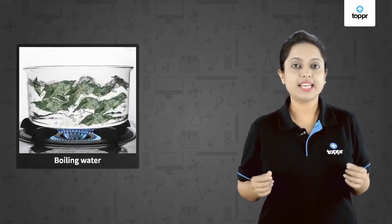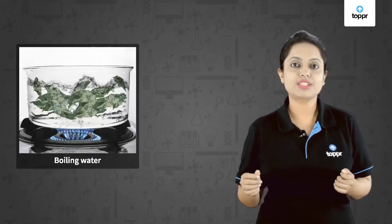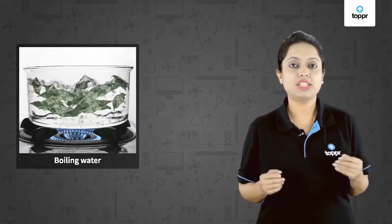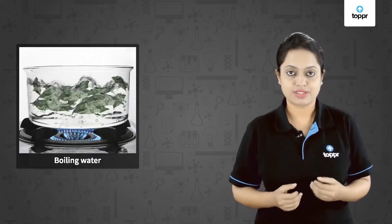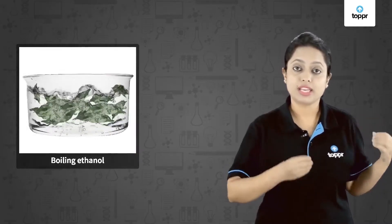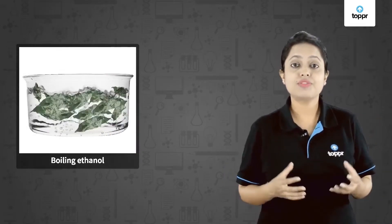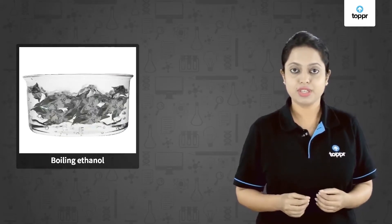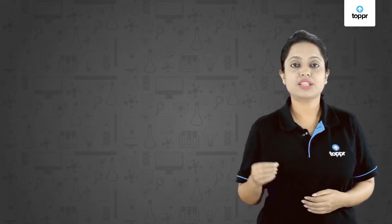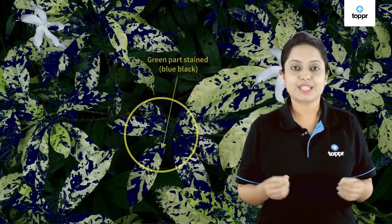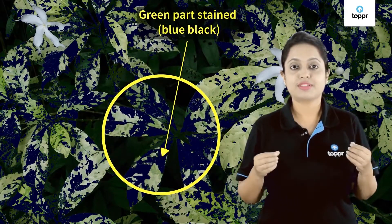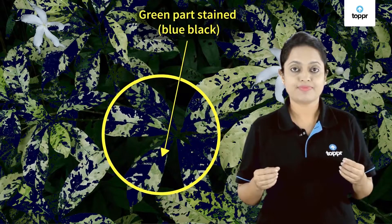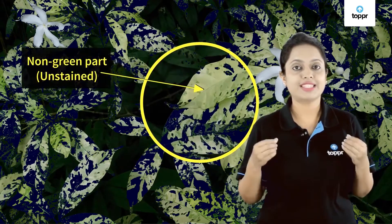Now boil this variegated leaf in water for 40 to 60 seconds — this will stop all the ongoing chemical reactions. Then dip the leaf in boiling ethanol for some time, which will remove all the color from the leaf. Then wash the leaf with water and put iodine solution over it. You will observe that all the green parts are stained blue-black as they contain starch, while the non-green parts are left unstained.